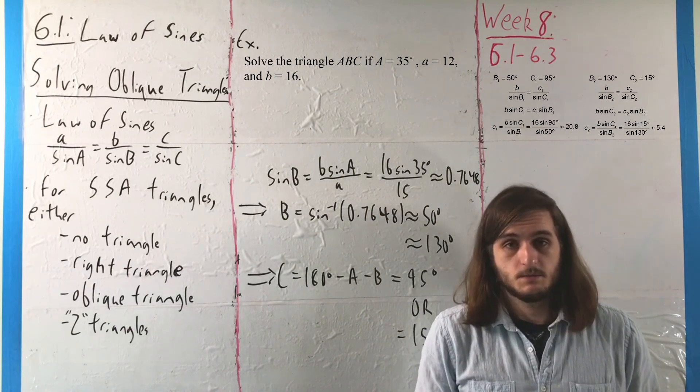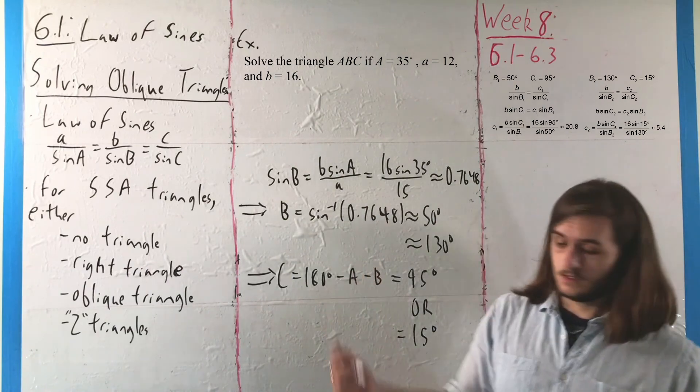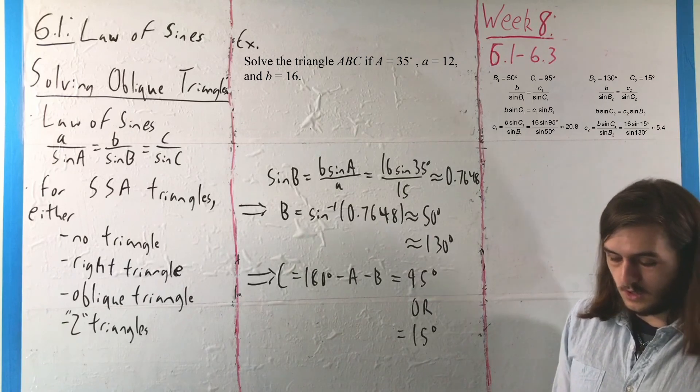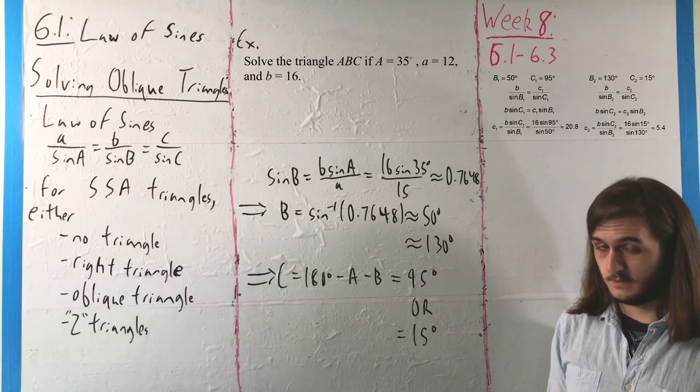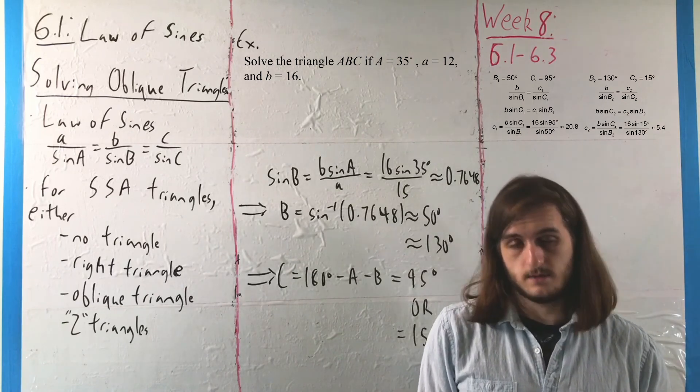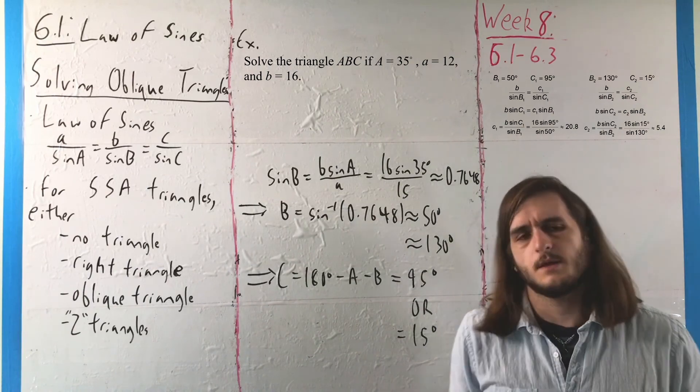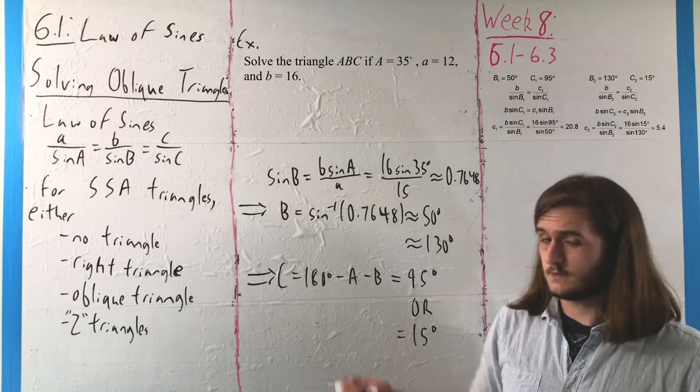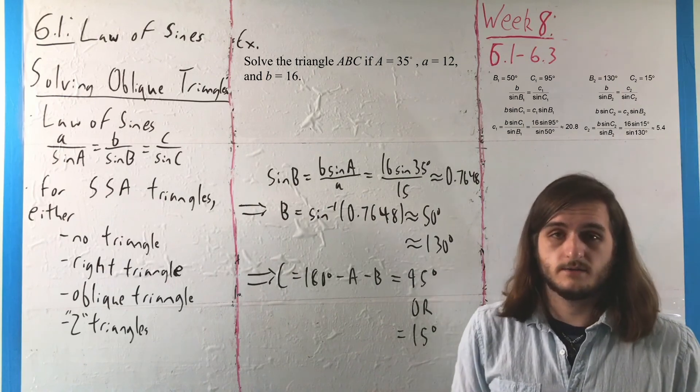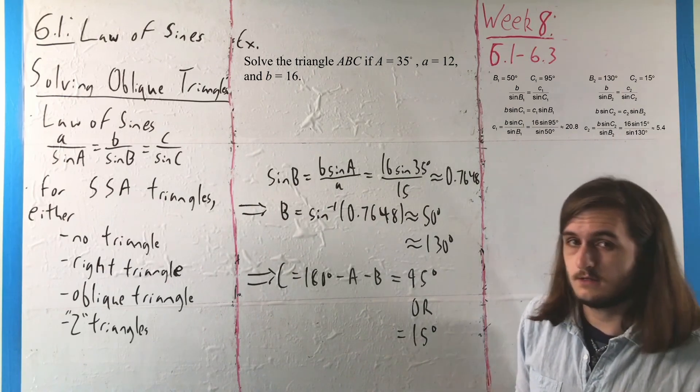And the last thing we're going to see from this section is how we can use the law of sines in order to be able to compute the area of an oblique triangle. Because it's kind of natural to think about that, that we can use this to get something in terms of the height. And if we want to get the area of a triangle, it's just one-half base times height.